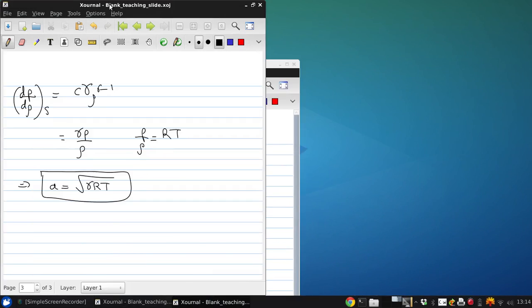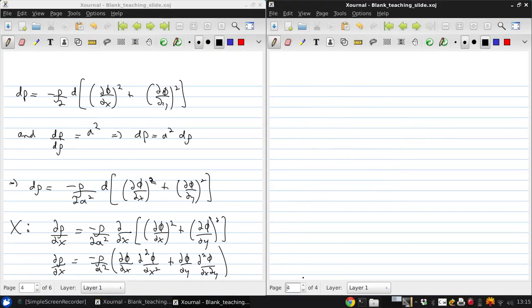And then similarly, we can get an equivalent expression in the y-direction, which is d rho dy negative rho over a squared, the same sort of derivative. But now with the second derivative on the y being up here rather than mixed derivative on the y-direction. Now if we take these two results for the x and y partial derivatives of density and put them into the mass conservation equation,